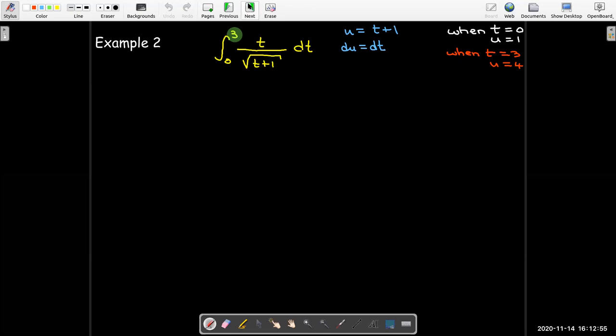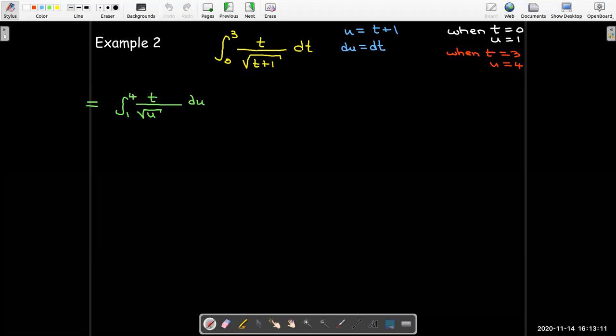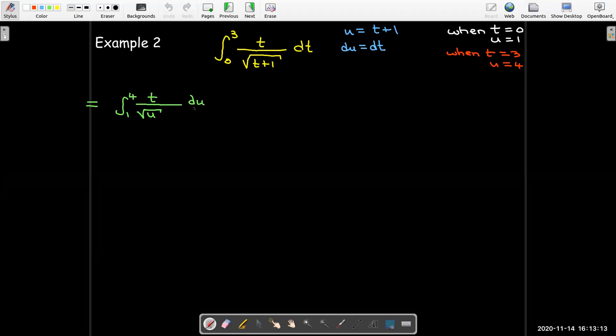Now let's make all of our substitutions and write our integral in terms of u. So bounds, 1 to 4. Replace t plus 1 with u. Replace dt with du. And moment of panic, I still have a t in there. I can't use anything else that I know if I have two variables inside the integrand.